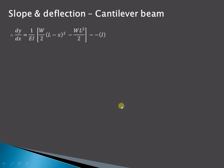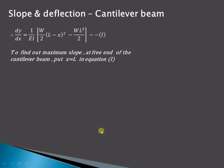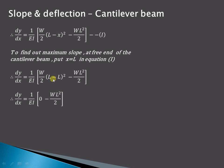Now considering the slope equation, we know that maximum slope occurs at the free end of the cantilever beam where x equals L. Substituting x equal to L: the term W/2·(L minus L)² equals 0, so the maximum slope at the free end is minus WL²/2EI. This is the equation for maximum slope in the case of a cantilever beam.